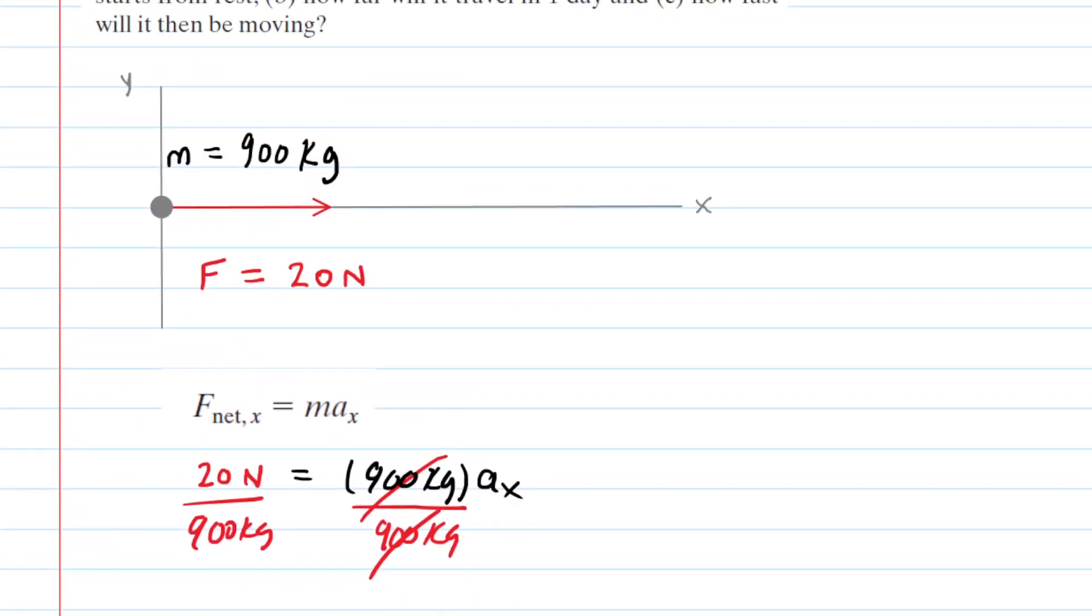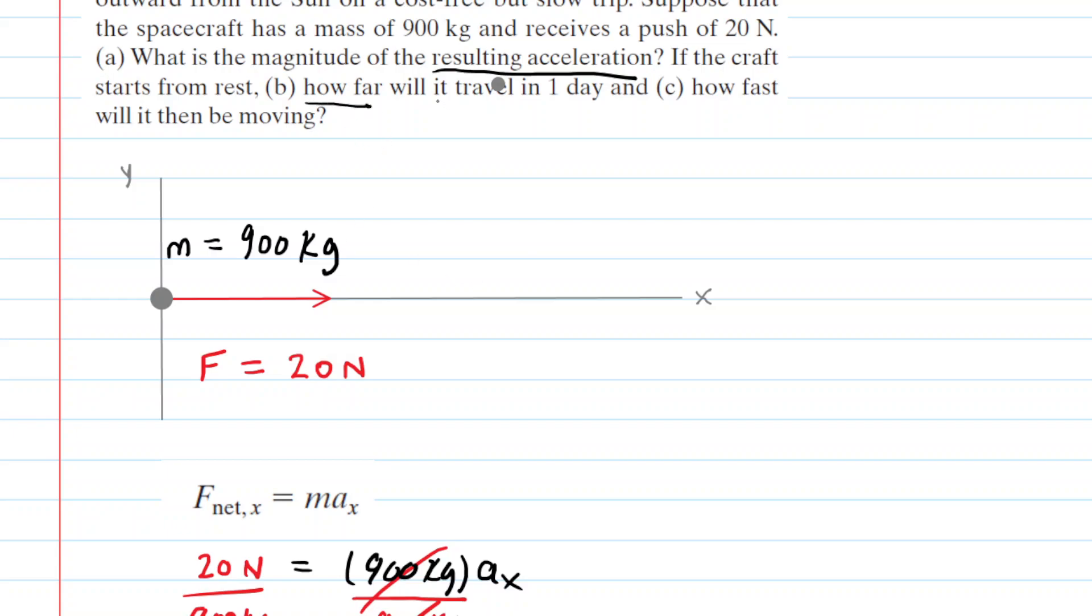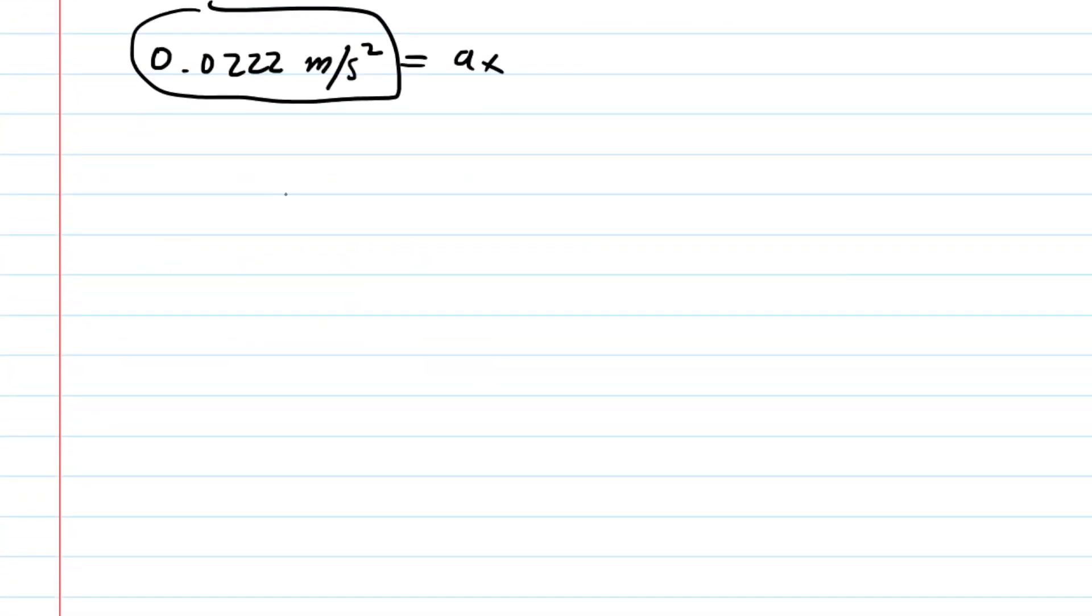In Part B we must calculate the distance that the spacecraft will travel in one day. We can use the kinematics formula: X minus X naught equals initial velocity multiplied by time plus one half times acceleration multiplied by time squared. We can simplify this to delta X, and since the spacecraft starts from rest, the initial velocity term cancels, leaving just one half multiplied by acceleration multiplied by time squared.